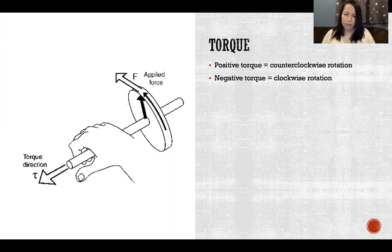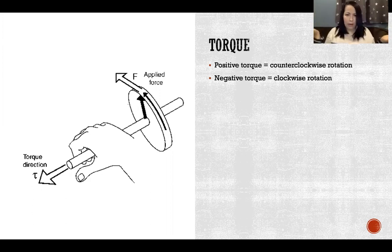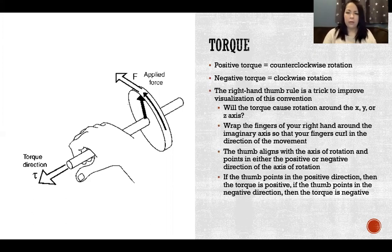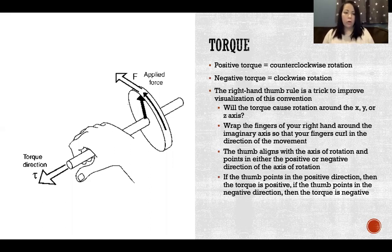It can be really hard to figure out — for example, if I flex my shoulder, is that clockwise or counterclockwise? It depends which way you look at it. That's why we have the right-hand thumb rule, which is the easy way to figure out if a torque is in the positive or negative direction in the body.